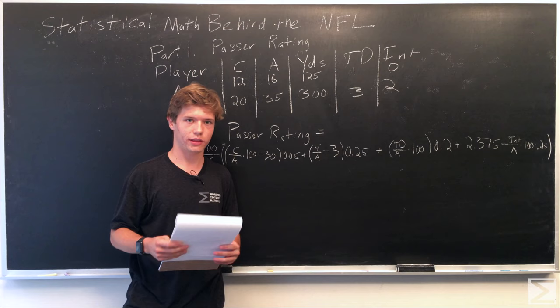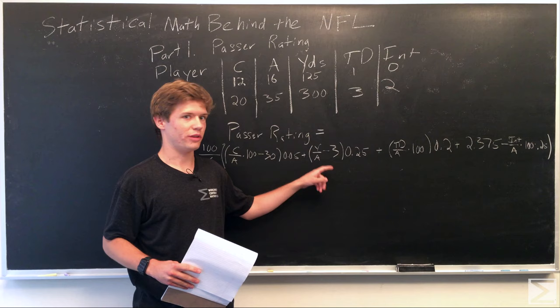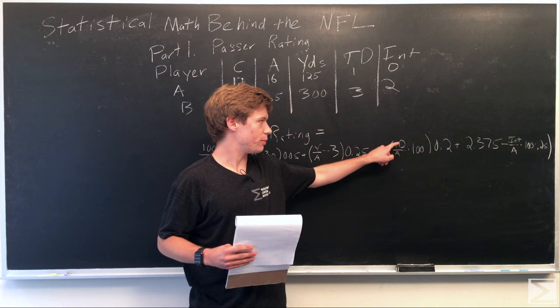Then we add the yards per attempt, subtract 3 from this and multiply the result by 0.25. Then we look at touchdowns per attempt, find that percentage, and multiply it by 0.2.